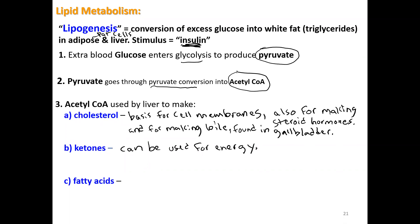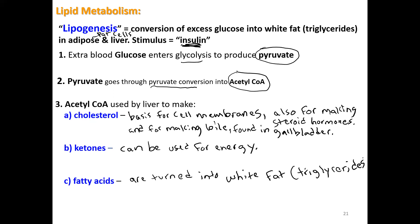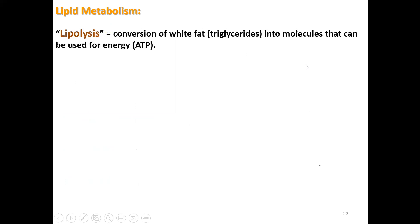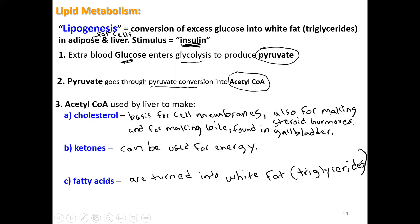The last thing acetyl-CoA is used to make is fatty acids, and fatty acids are turned into white fat — triglycerides. You've now gone from glucose through glycolysis, pyruvate through conversion to make acetyl-CoA. Acetyl-CoA can be used to make ATP, cholesterol, ketones, and fatty acids — one step removed from making white fat. This whole process is lipogenesis.